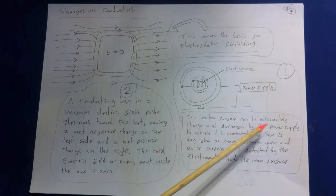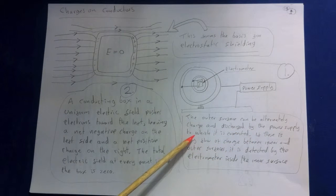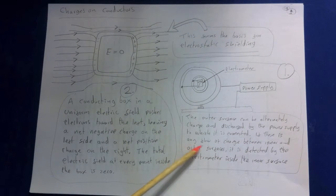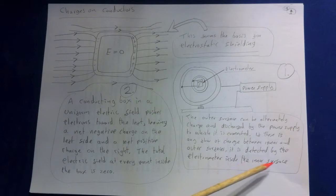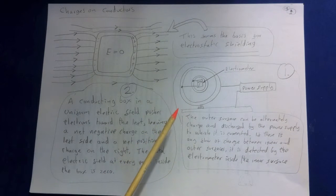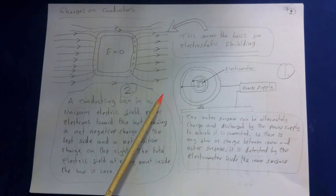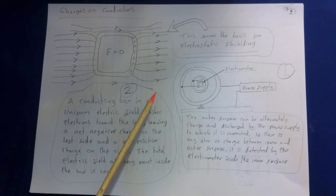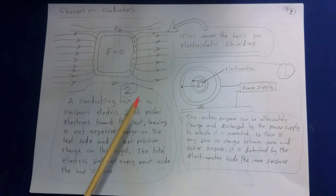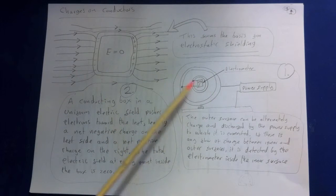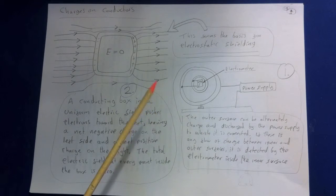The outer surface can be alternatively charged and discharged by the power supply to which it is connected. If there is any flow of charge between inner and outer surface, it is detected by the electrometer inside the inner surface. We can determine one over R squared to incredible precision. There's no reason to suspect the exponent two is anything other than exactly two. Because by doing this experiment, we're able to confirm that the exponent is exactly two.